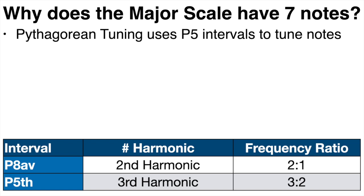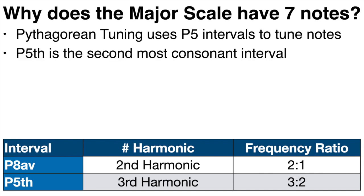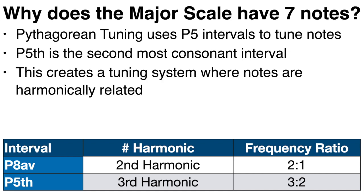In the previous video on tuning systems, we saw that the first formal tuning system created was Pythagorean tuning, which uses intervals of perfect fifths to tune notes. The perfect fifth is harmonically the second strongest interval after the octave, so using perfect fifths as the basis of your tuning system gives you notes that are harmonically related to each other.